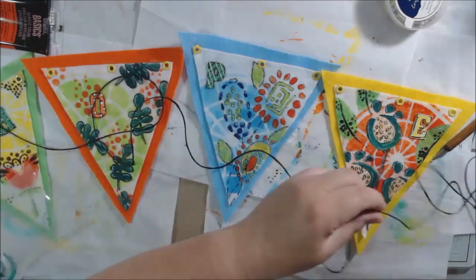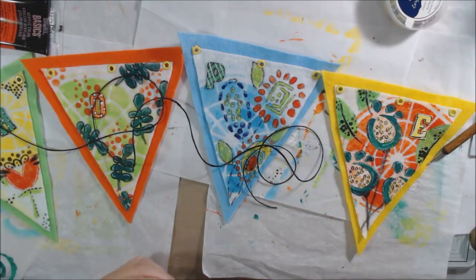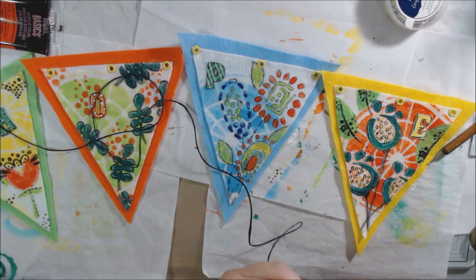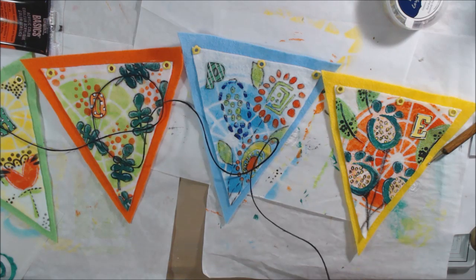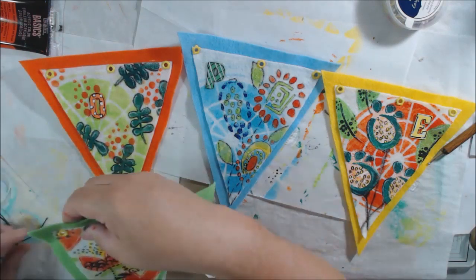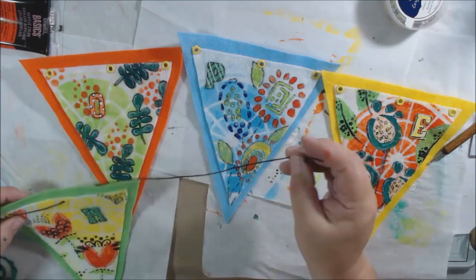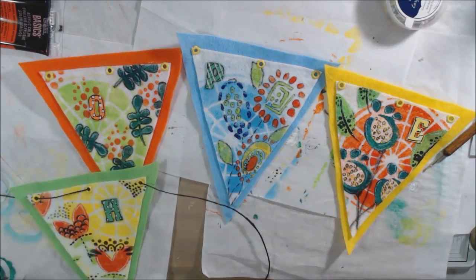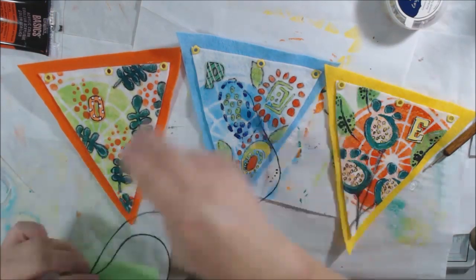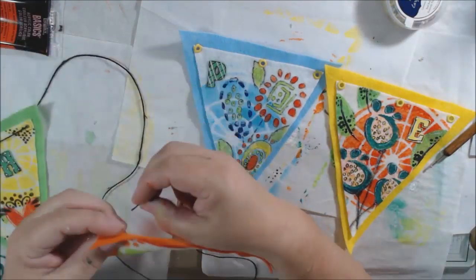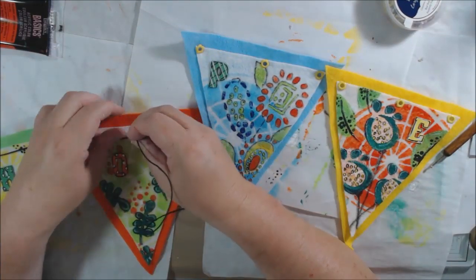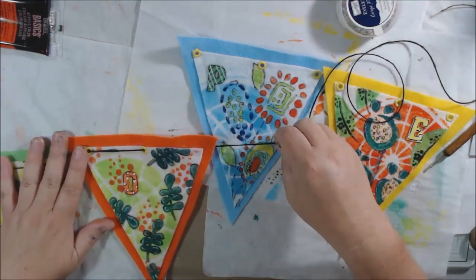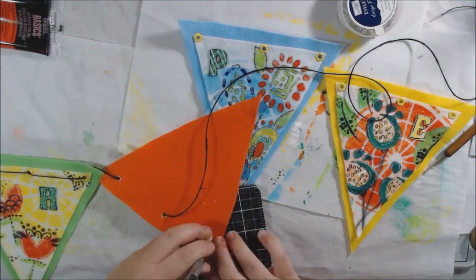I just used some black hemp twine to connect them all together. As I was weaving it through I realized that if I just weave it through two things, one it's not going to look uniform and it's going to slide. The way that I did it was to come up through, then down, then back up, then cross it back over the front. That made me have the extra line and made it stay in place.